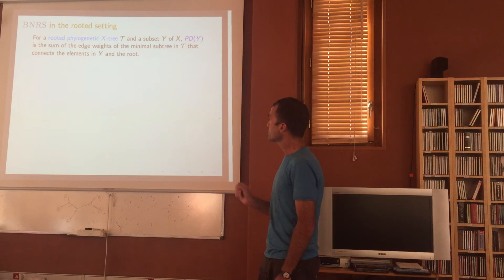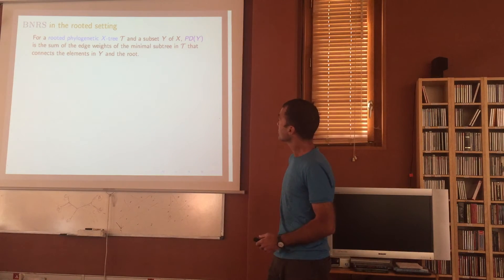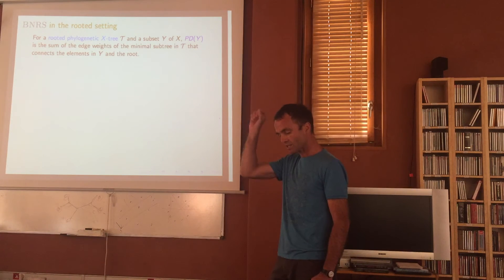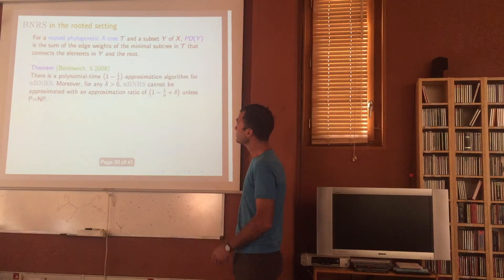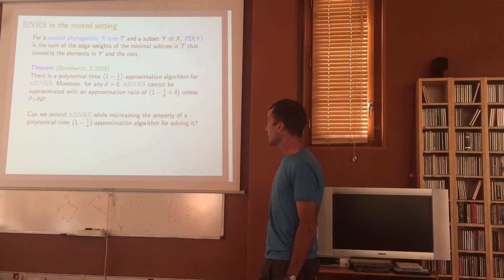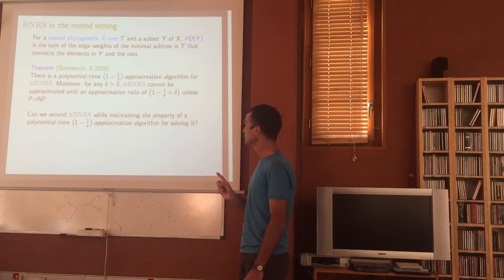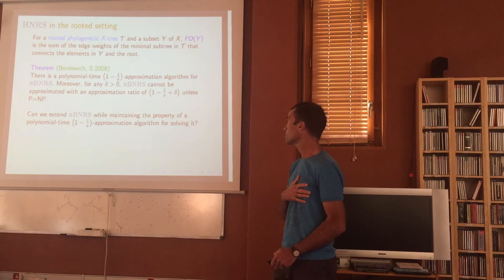Here's the rooted setting — rather than splits, we'll use rooted trees. I have a rooted tree where the leaves are labelled with elements of X. The PD score is the sum of edge weights, but we always include the root. In the rooted setting, we still get a 1 − 1/e approximation. The interesting question is: can we extend this while still maintaining polynomial-time 1 − 1/e? We're going to extend it in three ways.